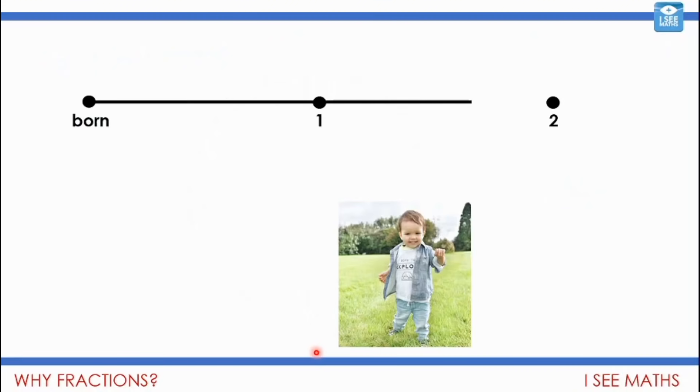Also, we might use them for describing age. So let's say this little fella, his age is represented by this line. So you can see his first birthday was a while ago. He's not yet two. So how old? Well, we could say he's one, but that really doesn't describe his age very well, because he's gone all this time since he was one.